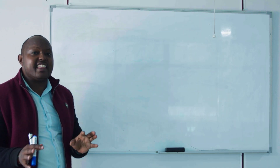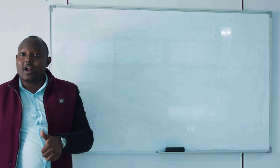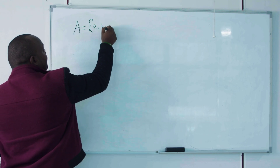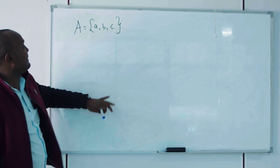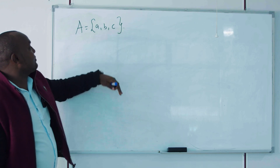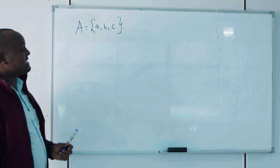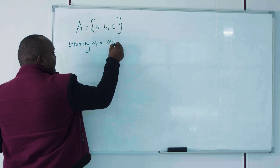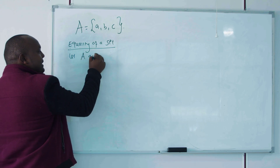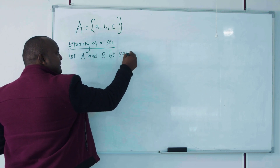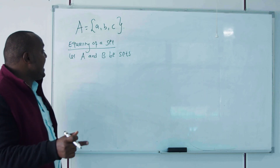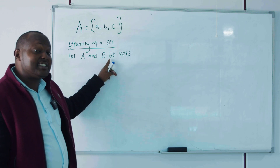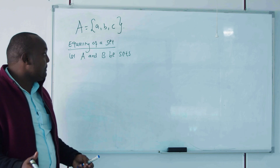Set B comprises three elements. Tom is a member of this group, but Mike is not a member of this set. So a set is a collection of distinct objects. Now let's focus on the equality of sets. We say, assume we have set A with elements a, b, and c. We use curly brackets, separate elements with commas, and use capital letters.